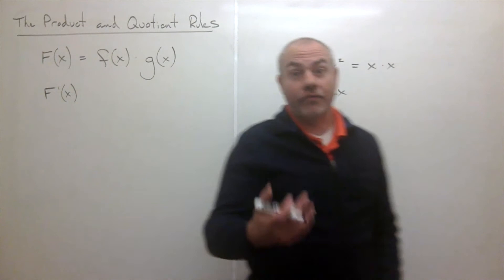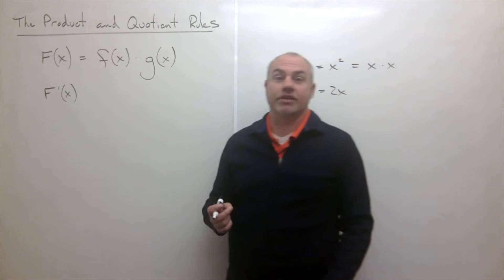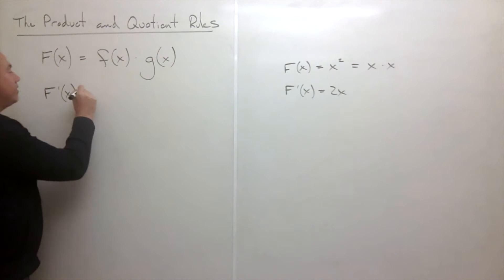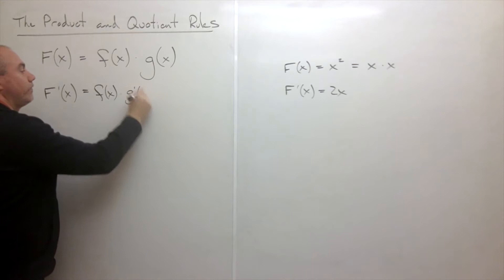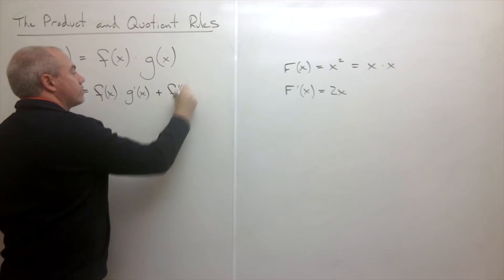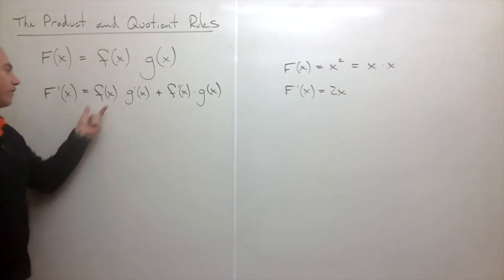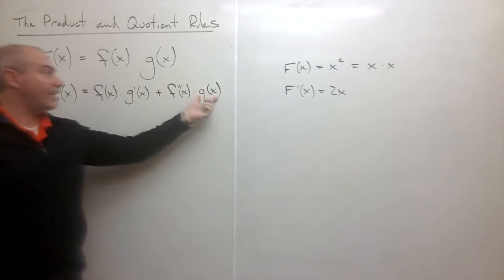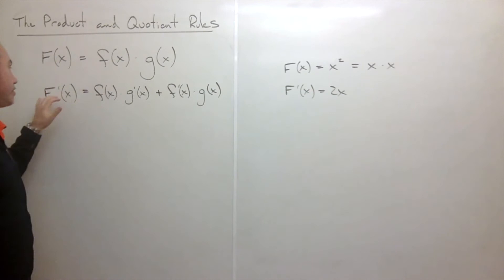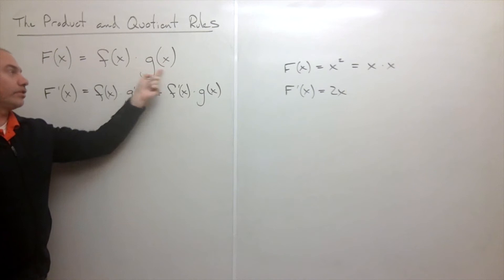This different thing that we do, we call the product rule. Let me write down the answer first, and then figure out why. The answer is: F prime of X equals f of X times g prime of X, plus f prime of X times g of X. It's the first function times the derivative of the second, plus the second function times the derivative of the first. This is the product rule for derivatives of two multiplied functions.